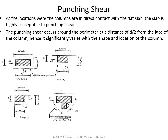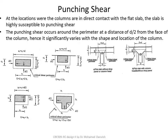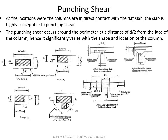For an irregular column, it will have a corresponding irregular shape as the plane of failure. Whether you have a drop panel or column head will affect the punching stress because it affects the area. We will discuss this in more detail when we cover drop panels in the second video.